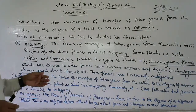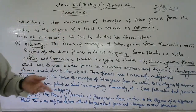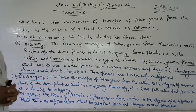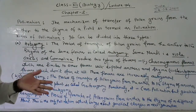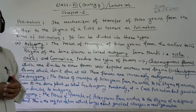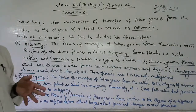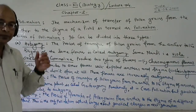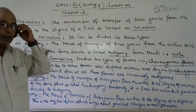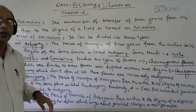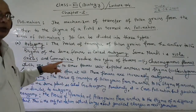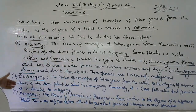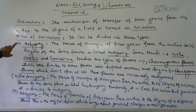In your previous class, we have discussed two different types of pollination — one is called self-pollination and another is called cross-pollination. But here we will discuss three different types of pollination.